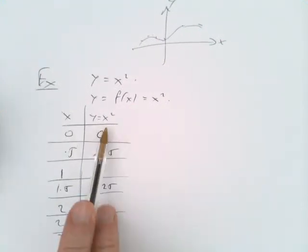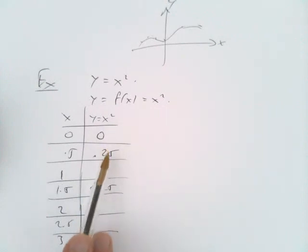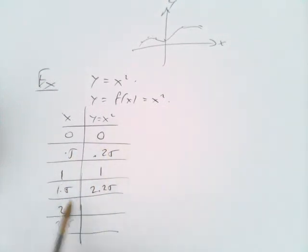We take each of these x inputs and produce the corresponding y output by squaring that number. So 1.5 squared is 2.25.